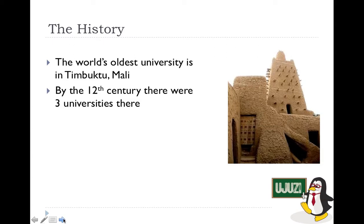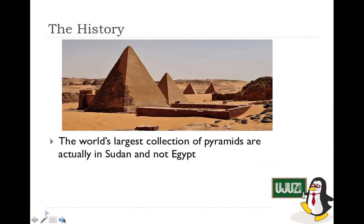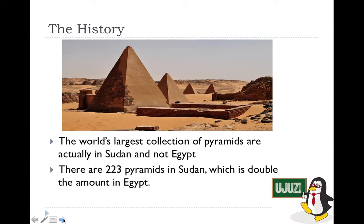Another interesting fact is that the world's largest collection of pyramids is actually in Sudan, not Egypt. These pyramids are smaller and steeper than those in Egypt, but there is a larger collection of them in Sudan. They haven't been as well explored because Sudan is less visited. There are 223 pyramids in Sudan — double the amount in Egypt.